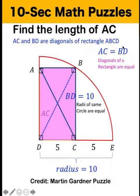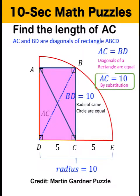And by substitution, we know that this BD is 10. That means AC is equal to 10 units. And that is now our answer for this simple math puzzle. And so the length of segment AC is equal to 10 units.